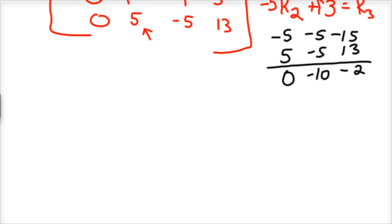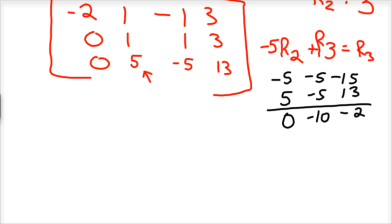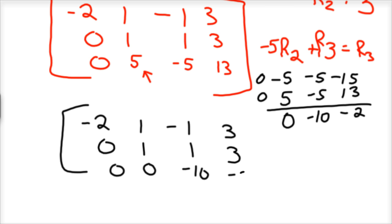So now we can go ahead and rewrite that again. So we've got negative 2, 1, negative 1, 3. We've got 0, 1, 1, 3. And we've got 0, sorry, there was a 0 at the beginning. I didn't get that. So I did kind of mess up, but not really. That's a 0. So 0, 0, negative 10, and negative 2.